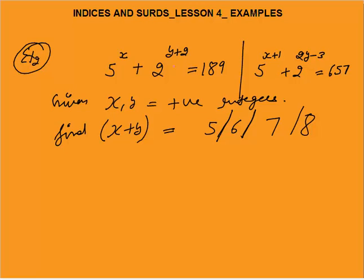The next example is: 5^x · 2^(y+2) + 189 = 5^(x+1) + 2^(...). Try to solve the question by pausing the video. If you are not able to solve, look at the solution. To solve this kind of question, there is no straightforward conceptual way. Better is to apply common sense and logic — figure out which powers of 5 and 2 will give you 189.